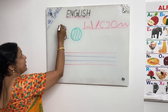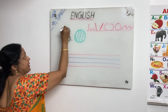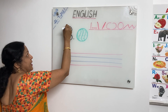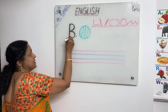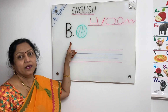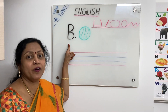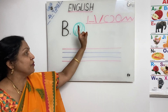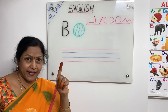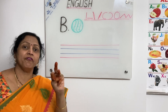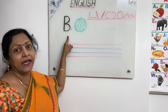First we have to write one standing line like this. After that write one right curve and one more right curve like this. So we have used three lines or strokes. One is the standing line, another one is one right curve and one more right curve. So three strokes we have used for writing capital letter B.